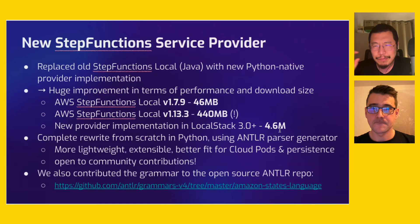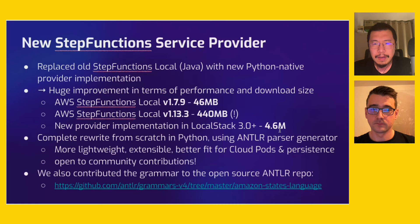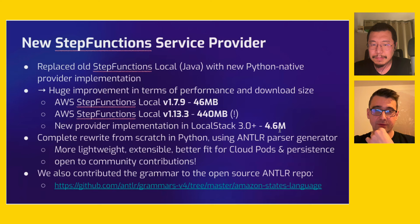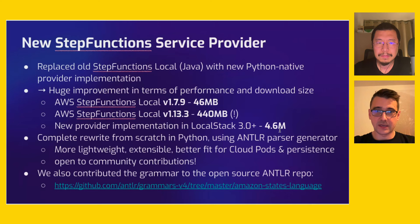I recently put out a blog post comparing Lambda orchestration workflows versus step functions. One thing you get with Lambda is the ability to put a breakpoint in your code. With step functions, if you're using a Lambda function as a task state you can still put breakpoints, but only for that particular step rather than the entire workflow. That's something a lot of people have asked for. Very excited to get your feedback and iterate on this in upcoming releases.